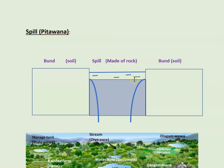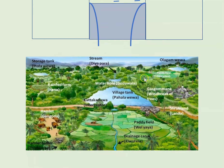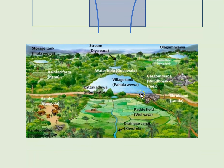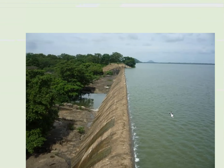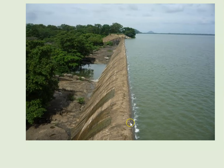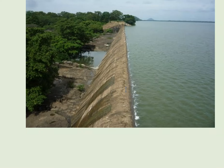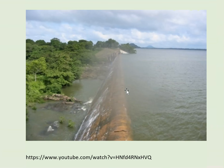The water would spill out through the spillway, which was built lower than the embankment. You can see the reservoir, the bund, and the rock spillway here. This is the Kalawa spillway — now made of concrete, but the original was made of rock. Here you can see Kalawa actually spilling.